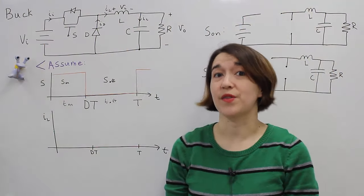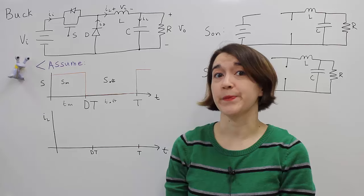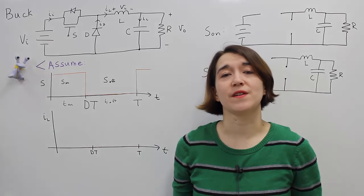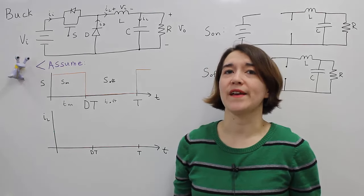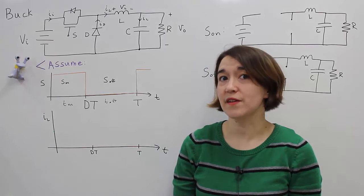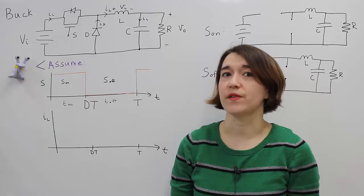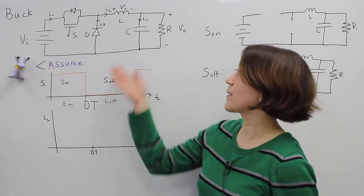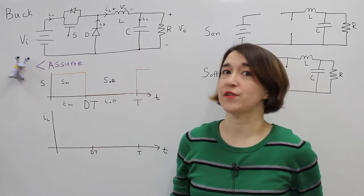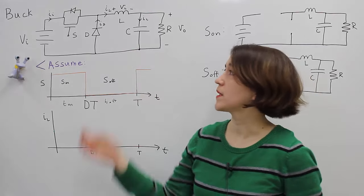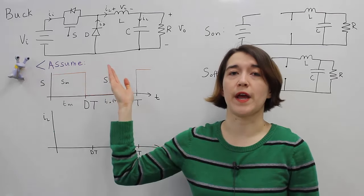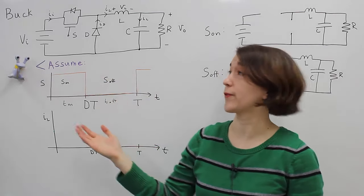Here we're going to talk about the buck converter. The buck converter is a DC-DC converter that uses a switch, inductor, and typically has a capacitor at the output. This is a basic topology for a buck converter.